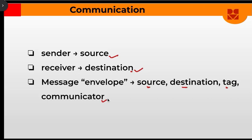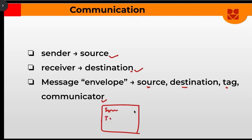And then the communicator — who is the one performing the send and receive? You can think of it as a delivery service like Flip Delivery, taking a package from you and sending it to a friend. The delivery guy takes the package; on it is the source, the destination, and a tag indicating whether it's the first, second, or twentieth parcel of the day. That's the communicator. We need this envelope to establish proper communication.